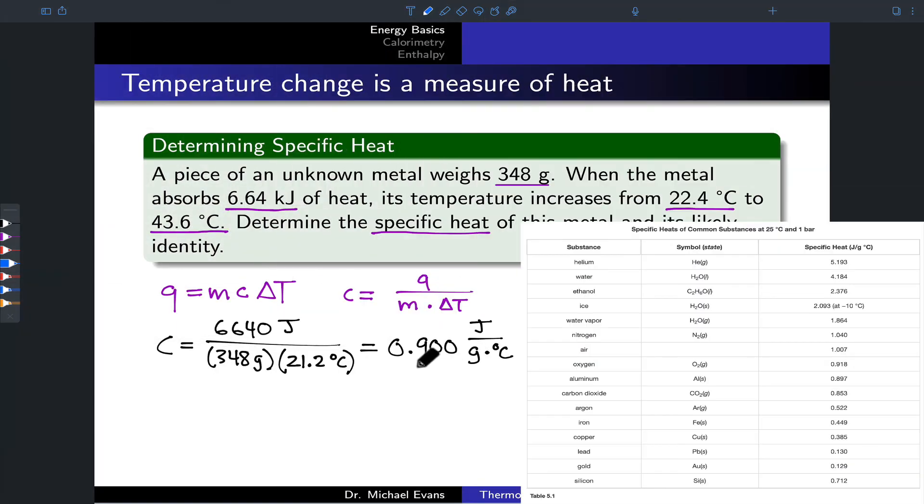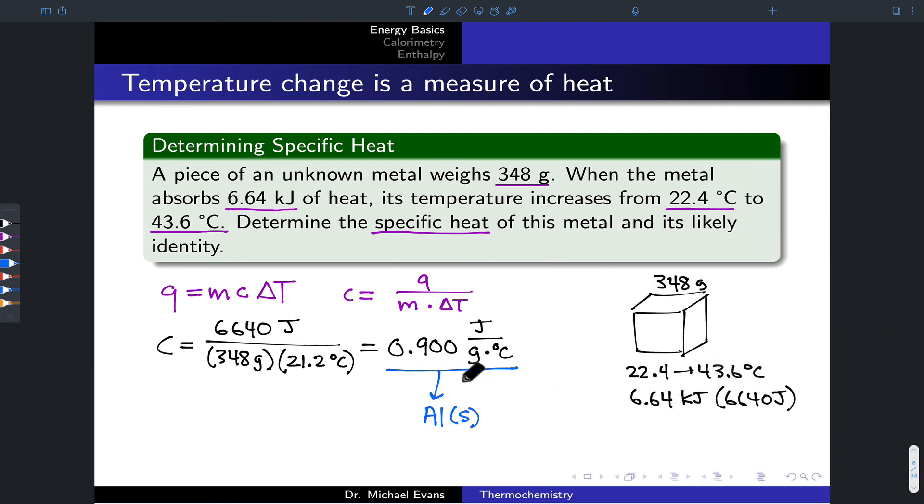If we now go to a table of specific heat values, for example, one can be found in the Chemistry OpenStacks textbook, Table 5.1 in the second edition, you'll see that this value most closely matches the specific heat of aluminum metal. So there you go. Relatively small value if you think about comparing this to 4.184 joules per gram degree C for water. So it makes sense that this would be a metal.